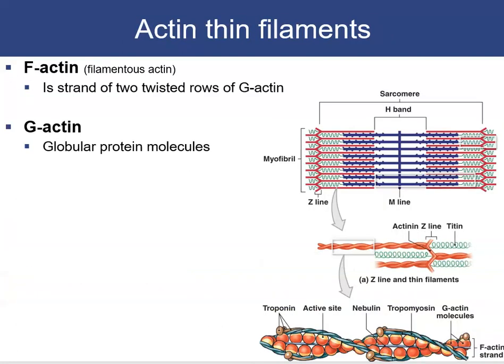Looking at the actin filament: G actin molecules are globular protein molecules that link together like beads. When many G actins are linked, you create F actin — a strand of two twisted rows of G actin. The whole double-stranded twisted structure is F actin; each individual bead is a G actin.